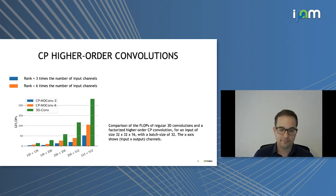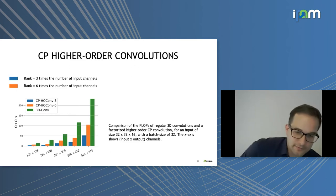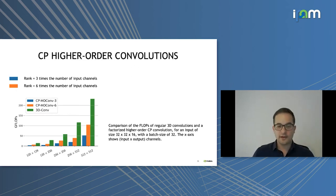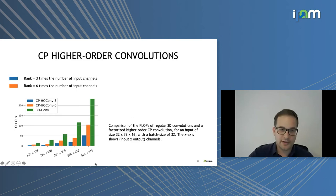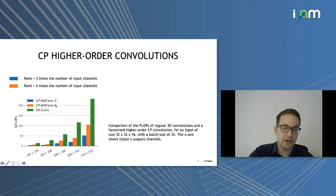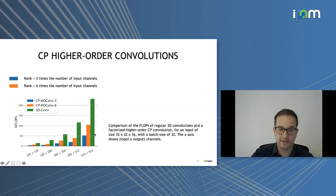This CP factorization results in fewer parameters but also fewer operations — measured in GFlops. A 3D convolution has far more parameters than a separable convolution even at high ranks. For example, with rank equal to six or three times the number of input channels — which is quite typical — we still have less than half the GFlops of a regular convolution.